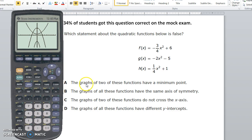Here's my first answer choice. The graphs of two of these functions have a minimum point. So minimum point means the vertex is going to be the lowest part of the graph. So this graph right here has a minimum because for this graph, this is the lowest point.